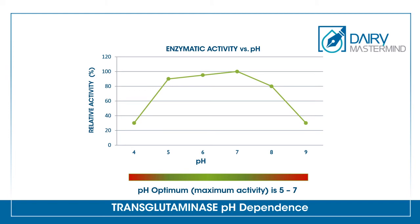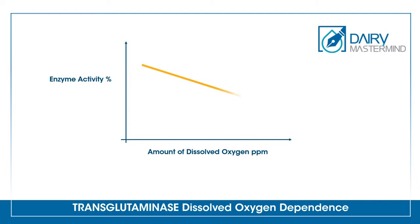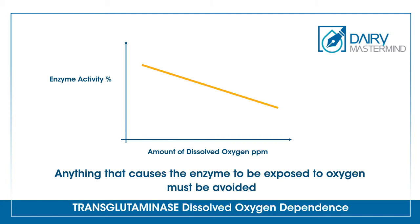Regarding pH, the optimum pH for TG enzyme activity is between 5 to 7. Enzyme activity decreases as the pH decreases below 5, and TG gets almost inactivated below pH 4.5. Regarding dissolved oxygen, the same as a starter culture, lowering the dissolved oxygen can be helpful for TG enzyme activity. Therefore, anything that causes the enzyme to be exposed to oxygen must be avoided.